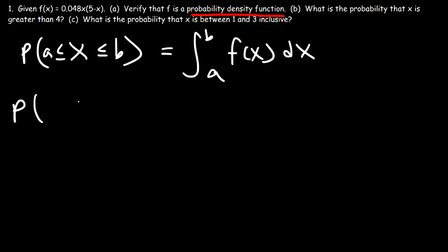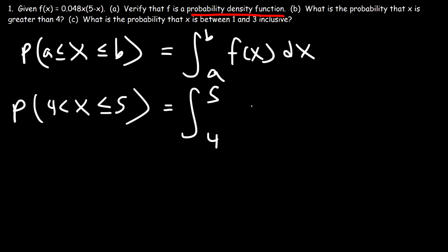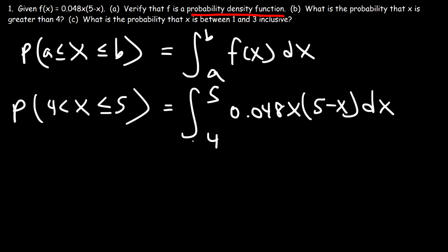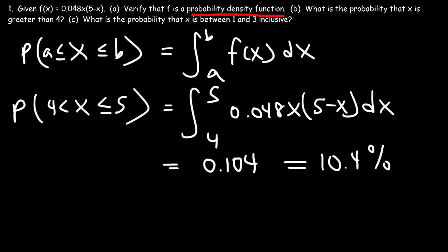To calculate the probability that x is greater than 4 — meaning between 4 and 5 — we evaluate the definite integral from 4 to 5 of 0.048x(5 minus x) dx. Using a calculator, you should get 0.104. As a percentage, there is a 10.4% chance that x is between 4 and 5, or that x is greater than 4.